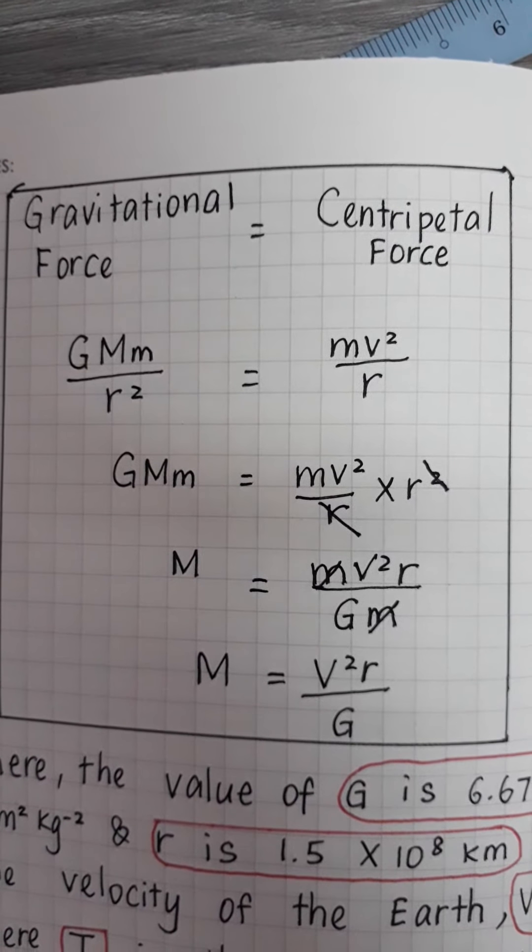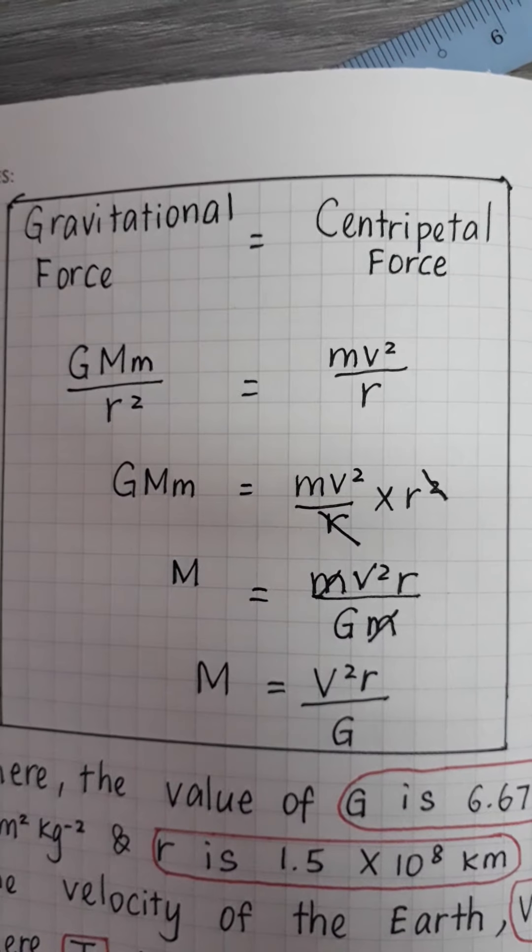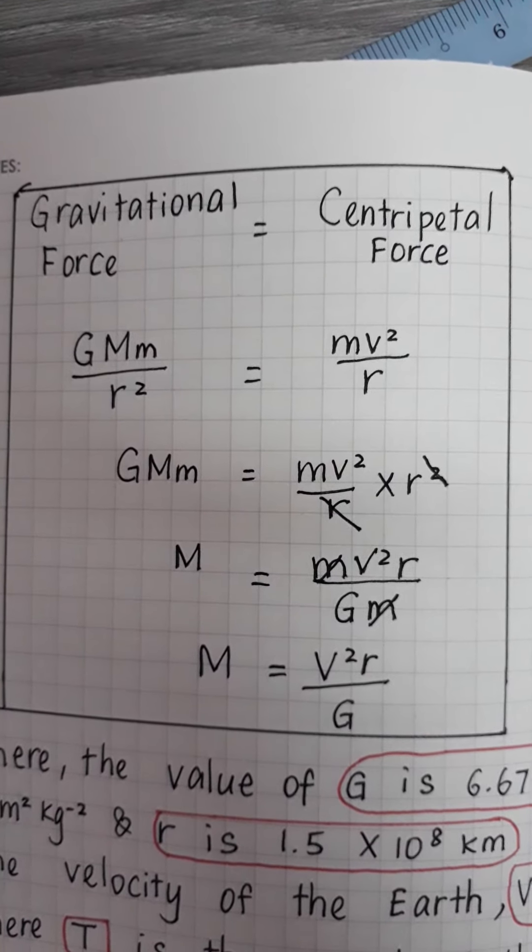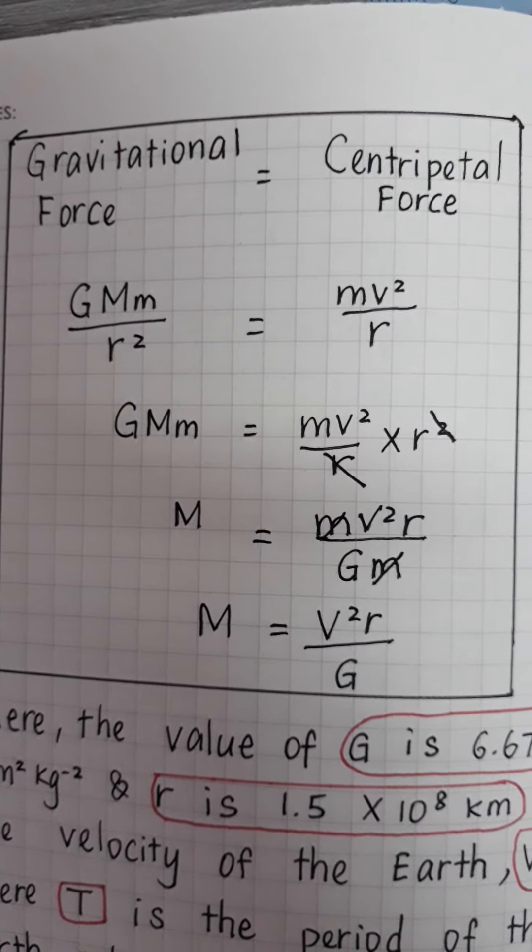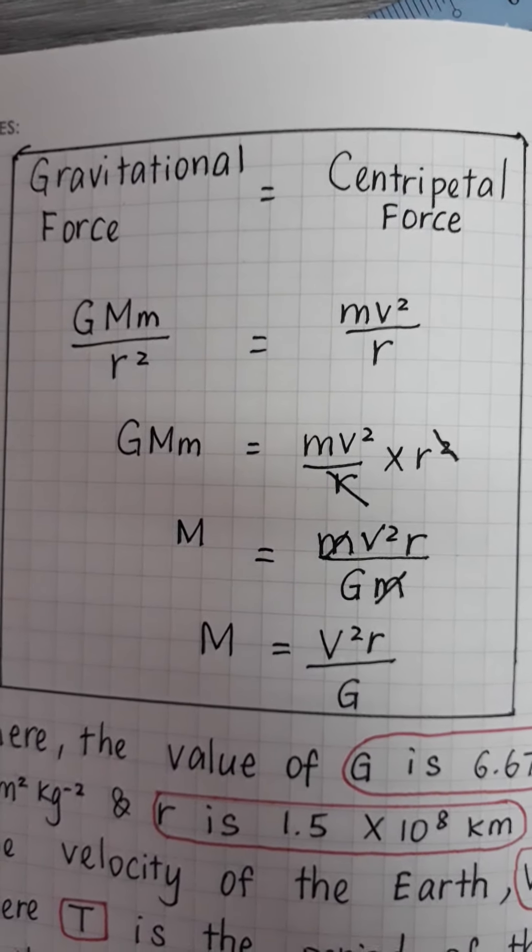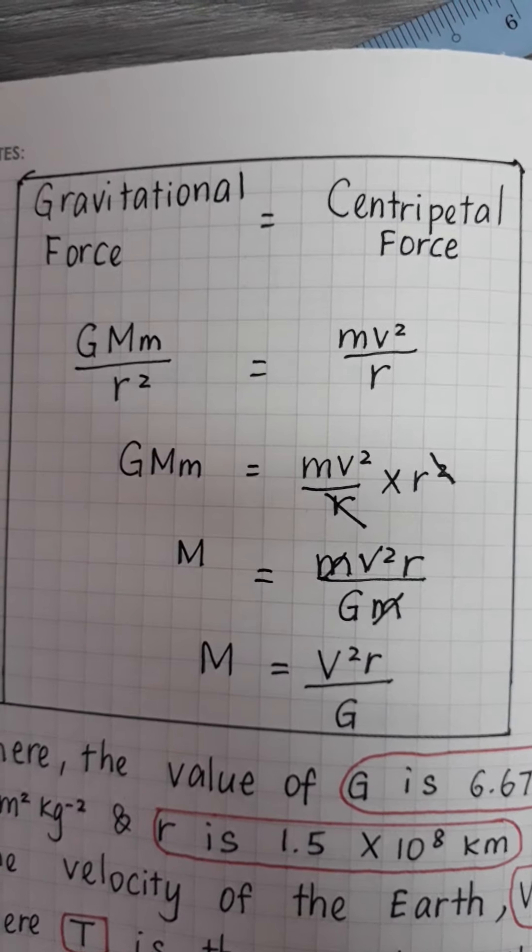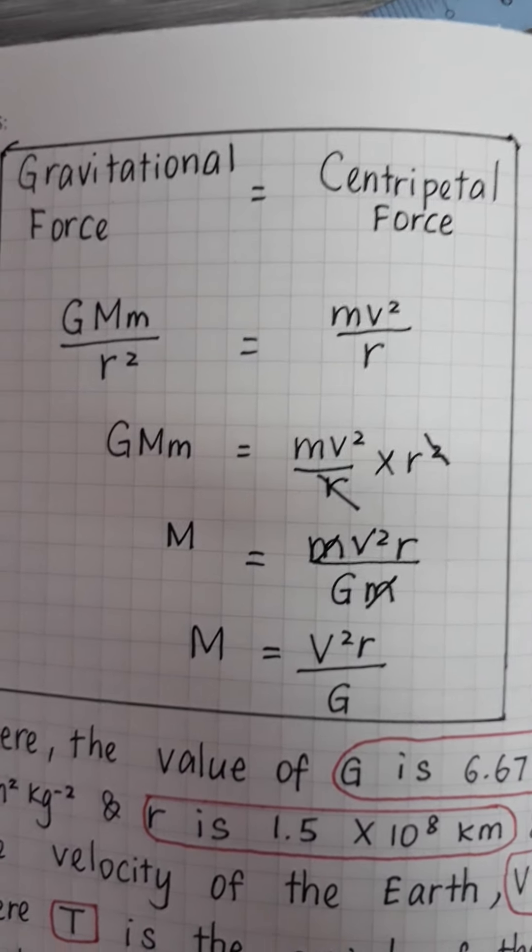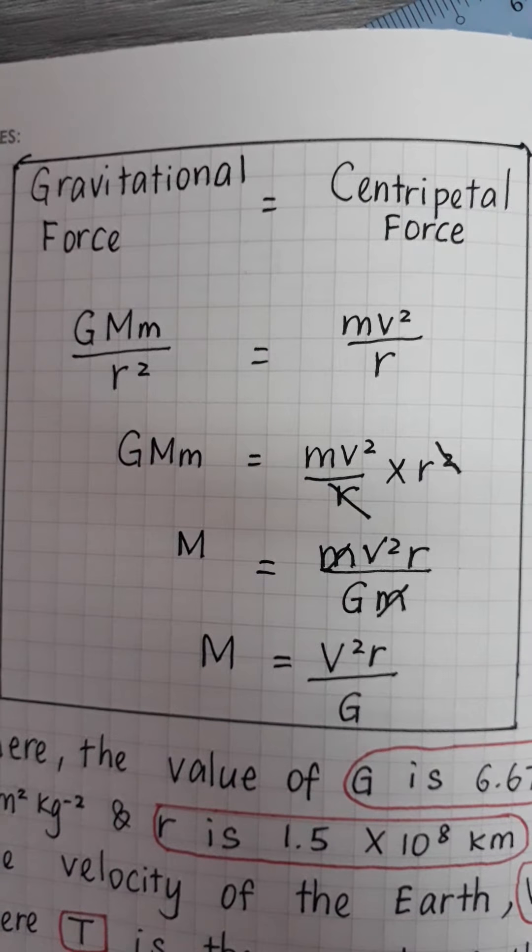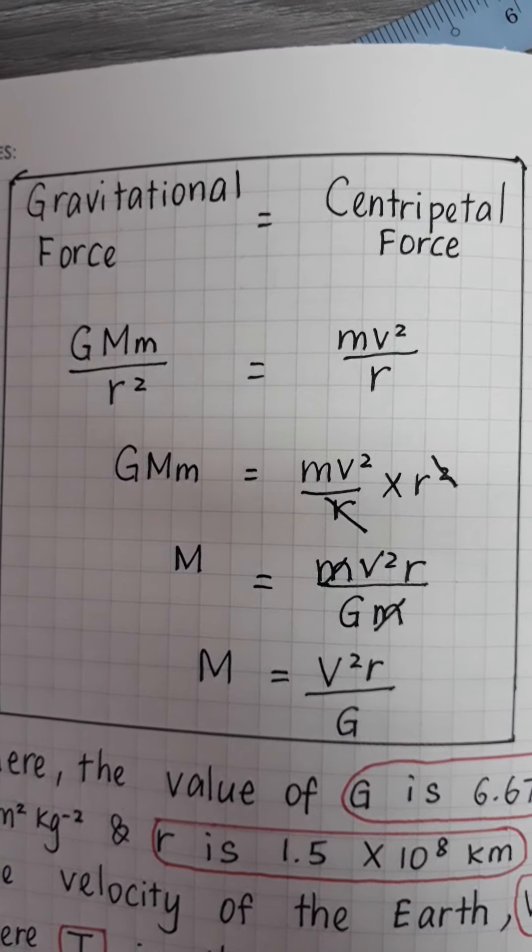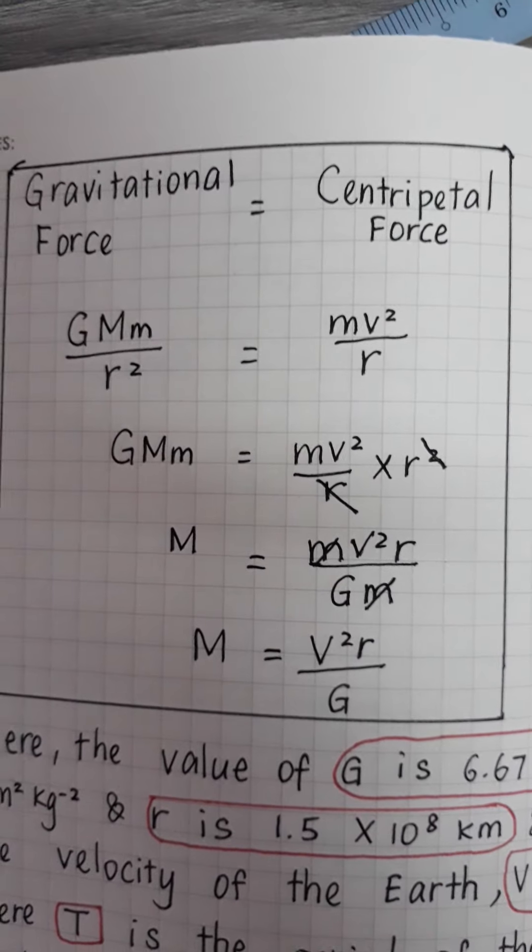R square cancel out, and then move the rest of the common factors. Cancel out the common factor, and then finally we will get the mass of the sun equal to v square r over G.